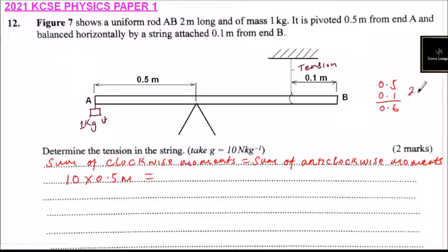So 2 meters, you subtract 0.6, you will be left with 1.4. That distance. So we are going to use that length to determine the clockwise moment.